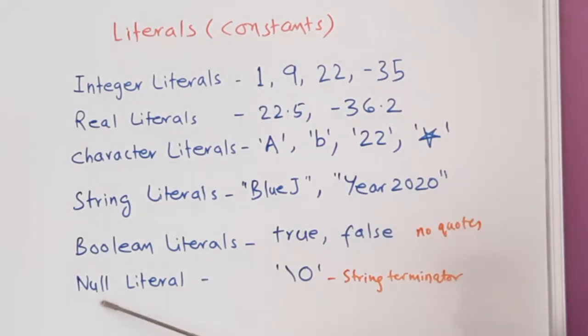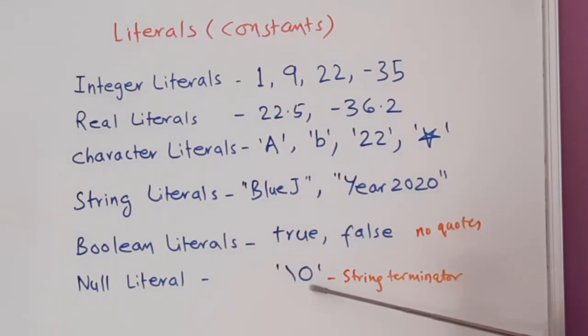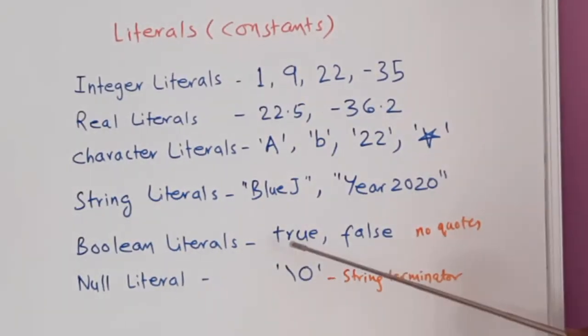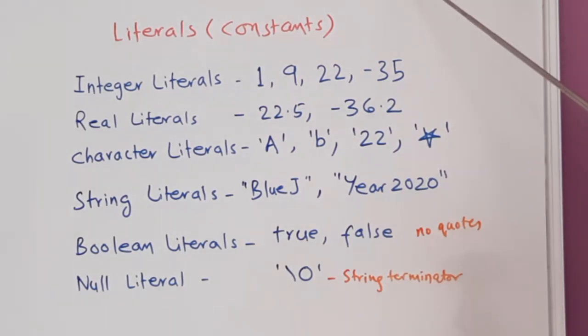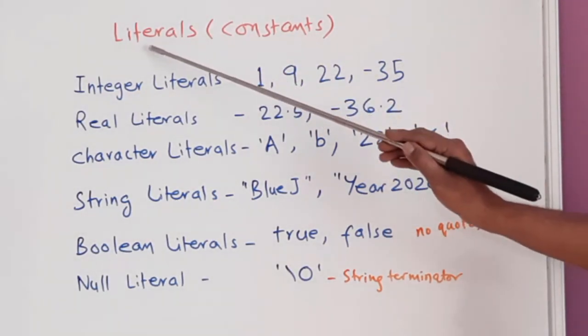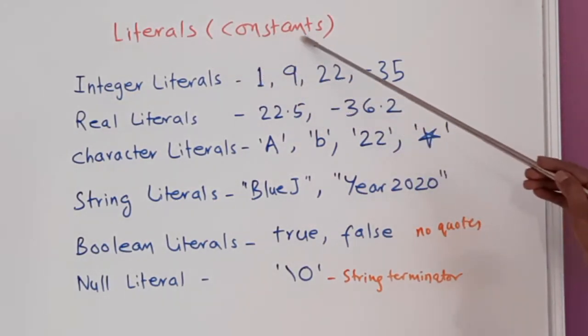Then we have null literals. Backslash 0, it is not O, it is 0. Backslash 0 in single quotes is called a string terminator. So these are all tokens in Java, these are literals or constants.